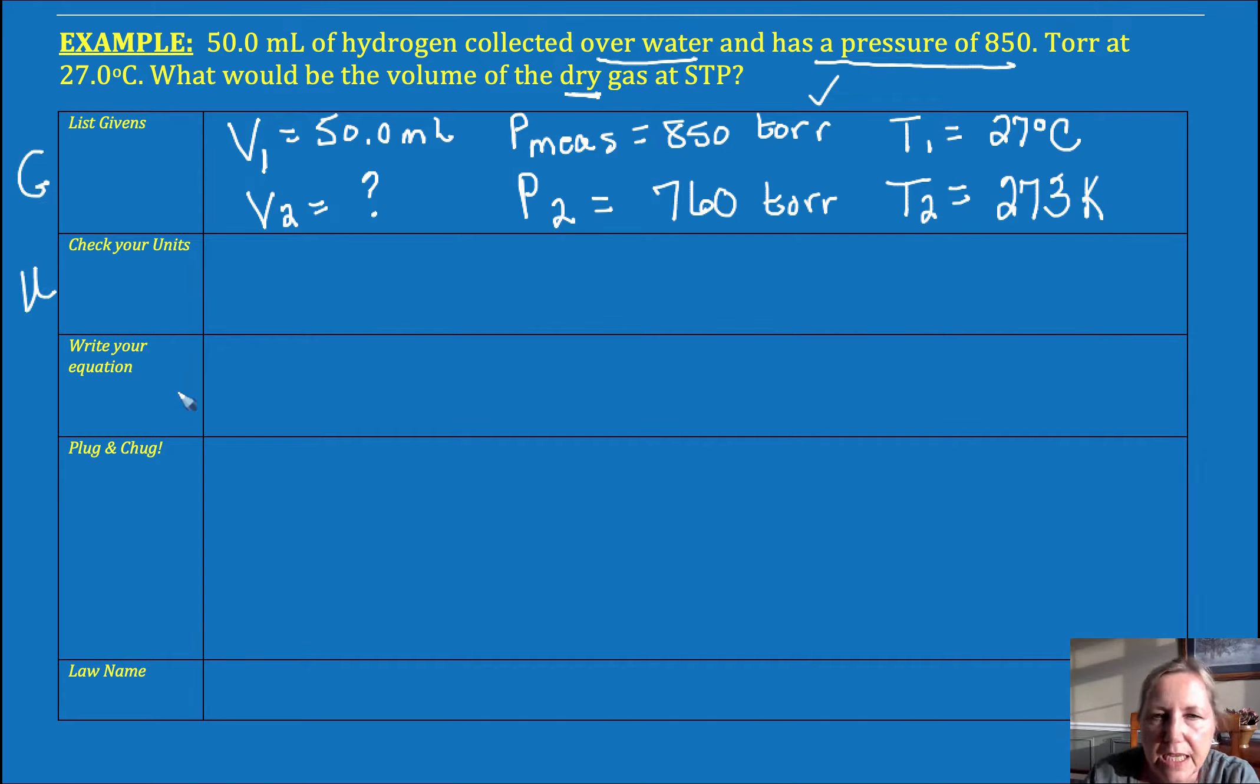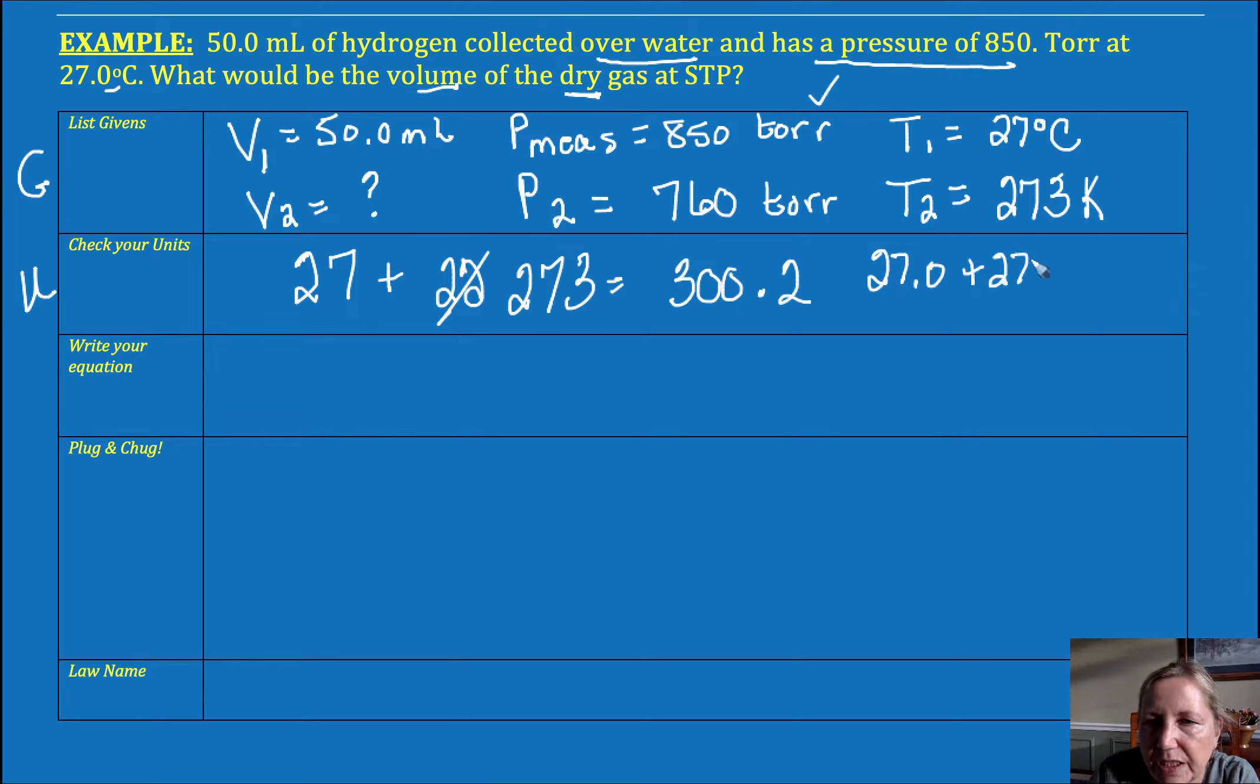I want to check my units. So milliliters is fine. It doesn't say what unit. So I'm just going to calculate it in milliliters. Pressures are torr. Temperature has to be changed. So I've got 27 plus 273 is going to equal 300. And it went to the ones place. If you want to make that 300.2, you can do that. So that would be, if I'd done 27.0 plus 273.15. So you have to do what your teacher says to do with that 0.15. A lot of teachers say just ignore it.